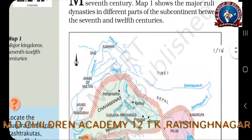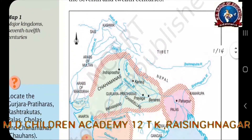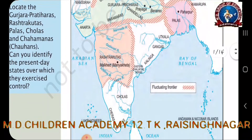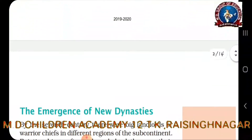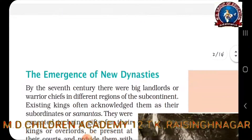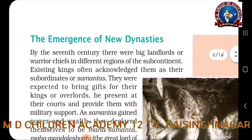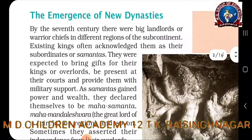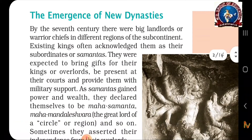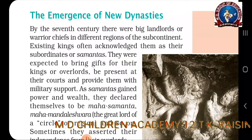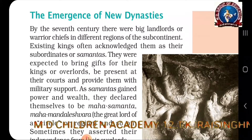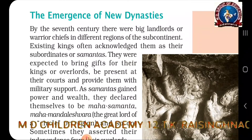All these were the new kingdoms which emerged after the 7th century, and we are going to study about them in detail in this chapter. The first topic is the emergence of new dynasties. By the 7th century there were big landlords or warrior chiefs in different regions of the subcontinent.